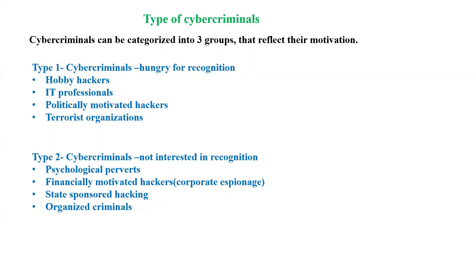The third sub-type of type two is state-sponsored hacking — whenever a cyber attack is conducted by a government or a government agency against other nations or government organizations, it is called state-sponsored hacking. The fourth sub-type is organized criminals.